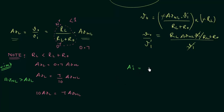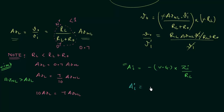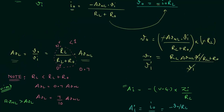Now we will calculate the current gain AI. From the last lecture we know the direct formula: current gain equals negative of voltage gain multiplied by the input impedance over the load resistance. However, I will obtain it using the definition of current gain. According to the definition, current gain is equal to the ratio of output current to the input current. We can see that Io equals minus Vo divided by RL.